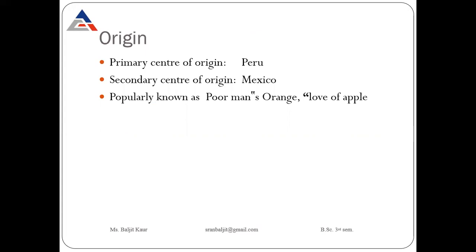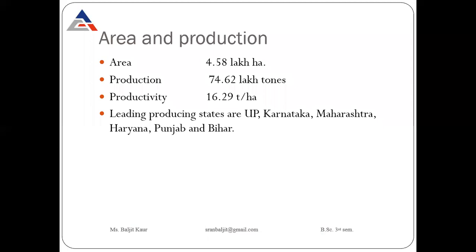Now the origin of tomato. Tomato was originated in Peru, so Peru is the primary center of origin and Mexico is the secondary center of origin of tomato. Tomato is popularly known as 'poor man's orange' or 'love apple' — these are the other common names of tomato.